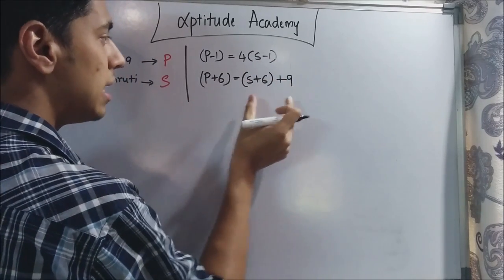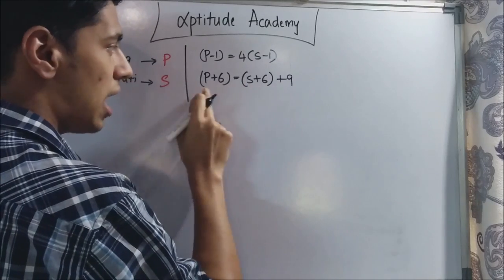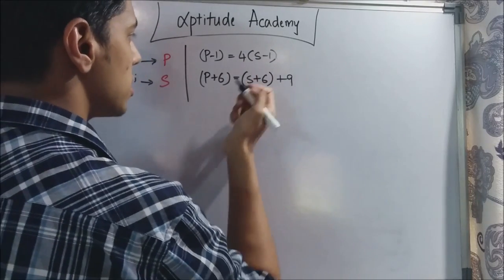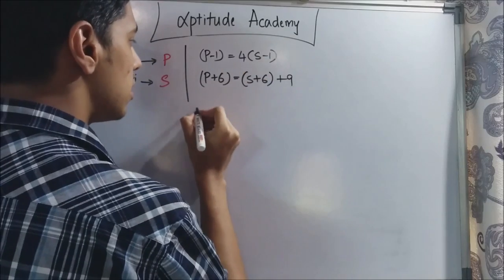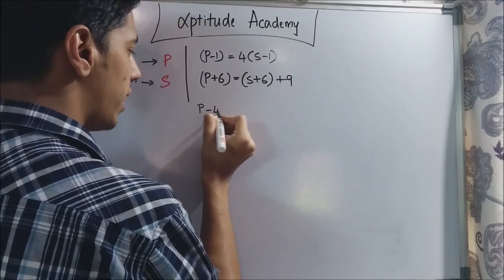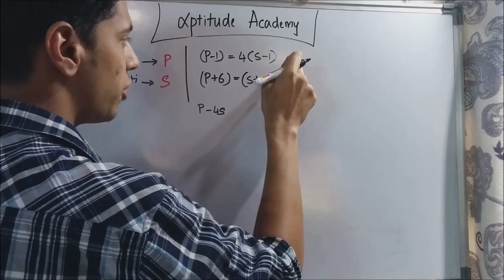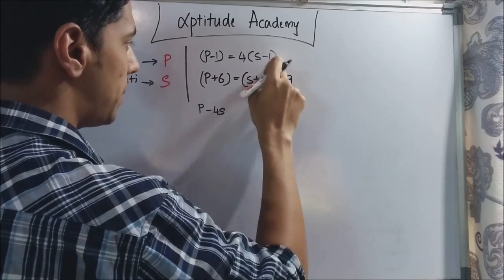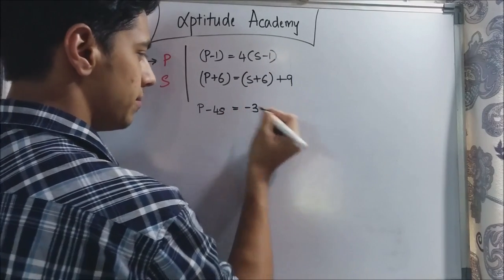So Priya is 9 years elder than Shruti's age after 6 years. Now just solve these equations. So now you can write the first one as P minus 4S. This minus 1 if you take it there, this will be minus 4 plus 1. So this will be minus 3.